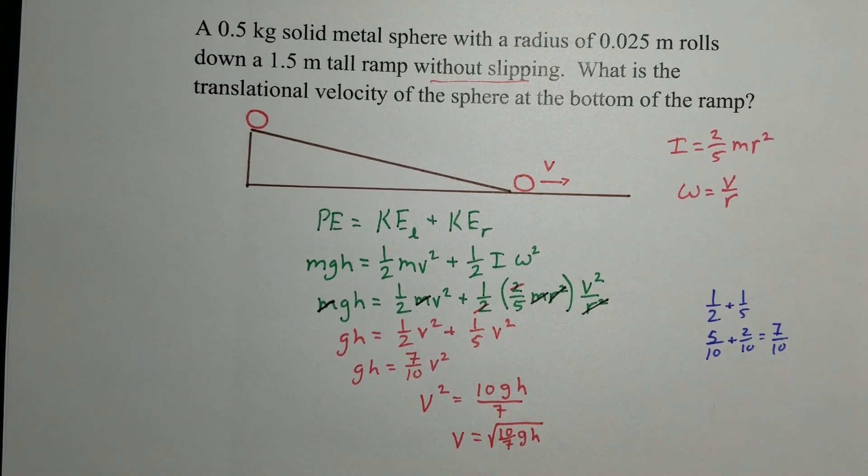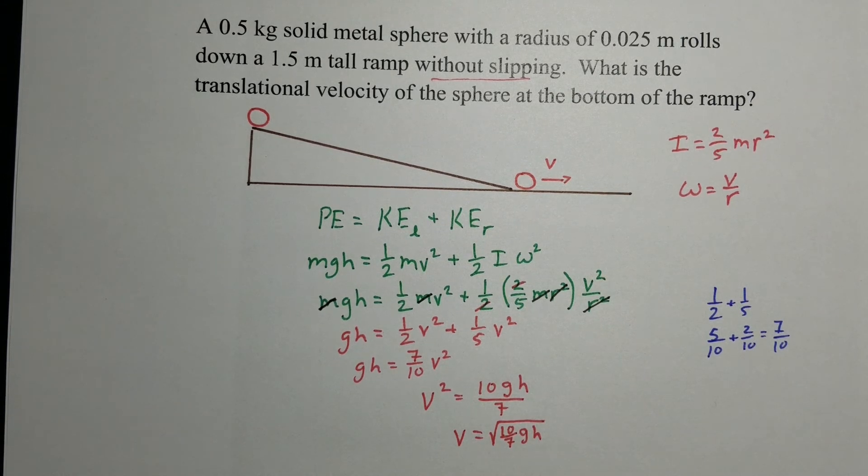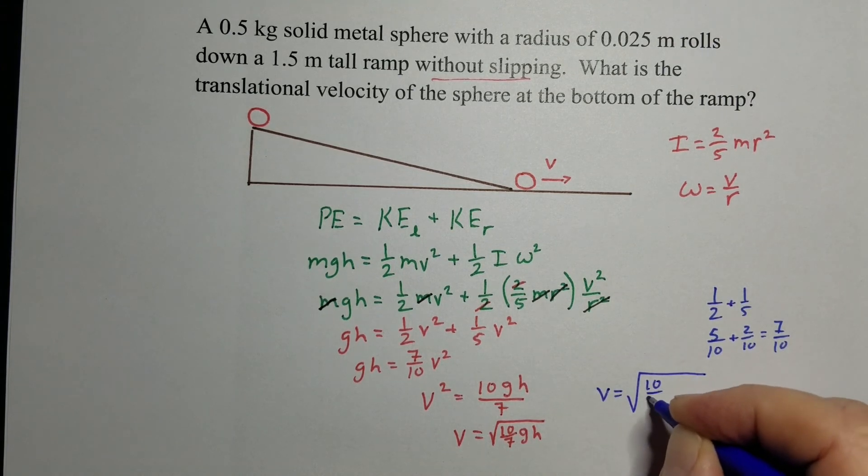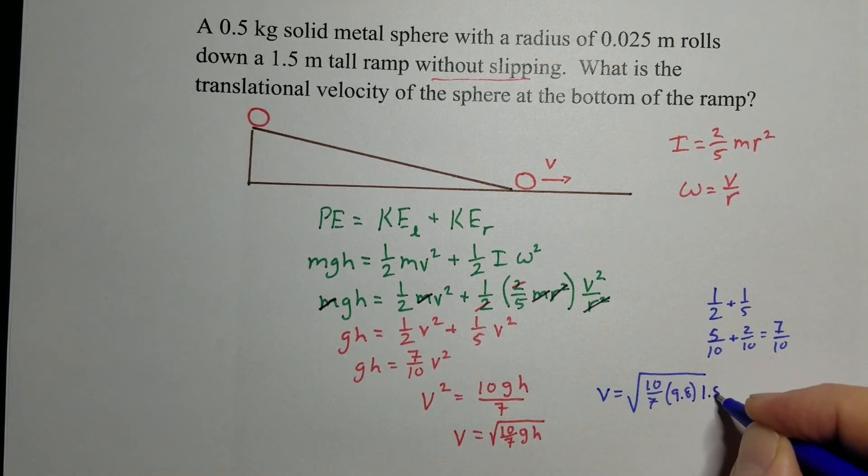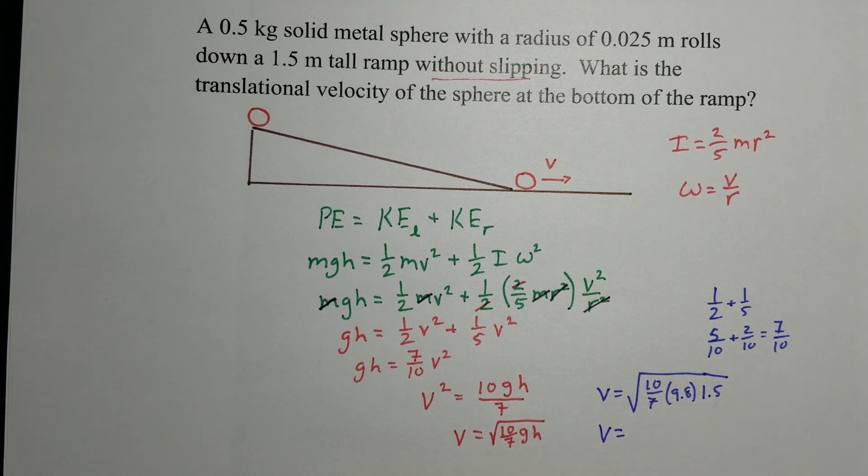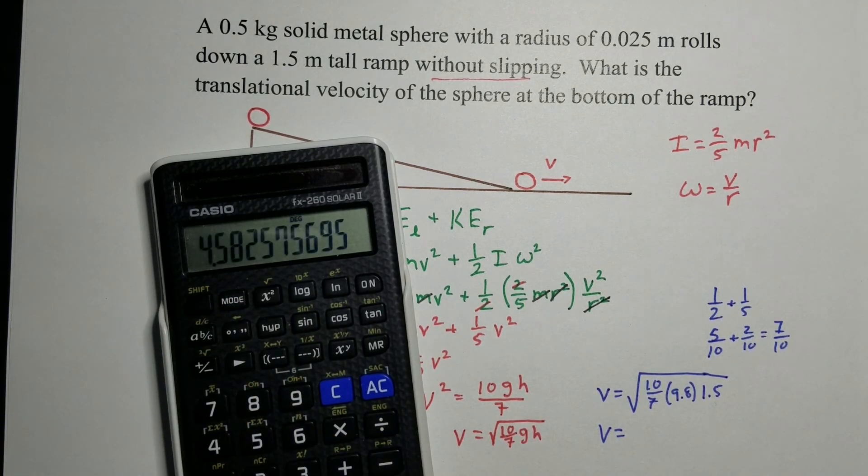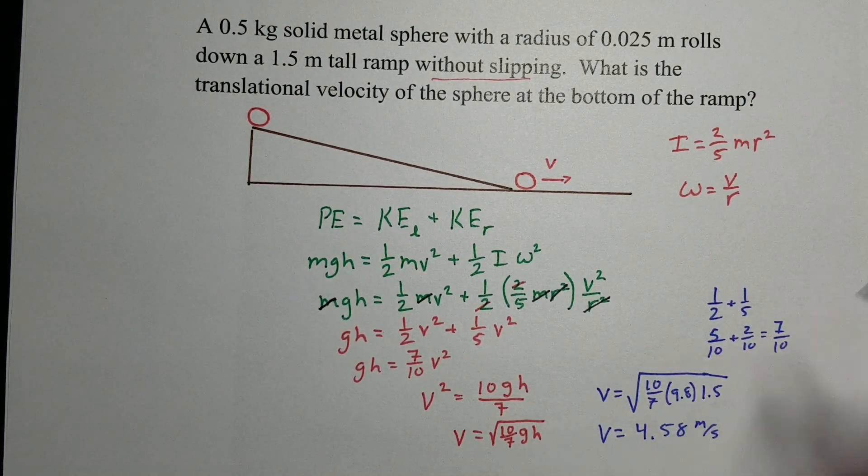Let's go ahead and put our numbers in. Let's see if we get the same answer as before. So we simplify that all down into just that expression right there. So plug in our numbers. 10-sevenths gravity is 9.8 and our height was 1.5 meters. All right, so here we go. 1.5 times 9.8 times 10 divided by 7. Take the square root. We get 4.58 meters per second, which is the exact same answer we did before when we plugged all the numbers in before.